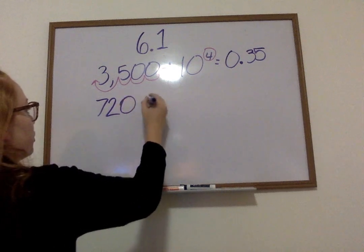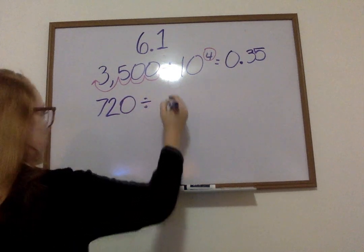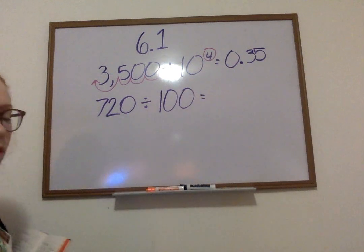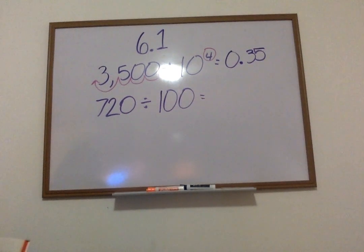If I had 720 divided by 100. Well, I am dividing by a product that's 100. I mean, a product of 10. And I know that my number is going to get smaller. And my decimal is going to move to the left.